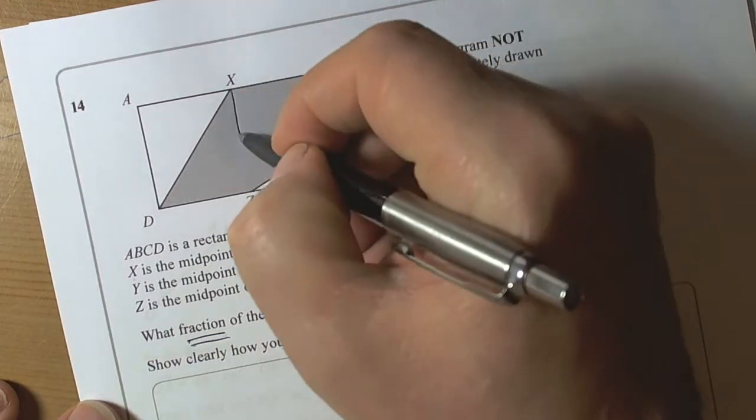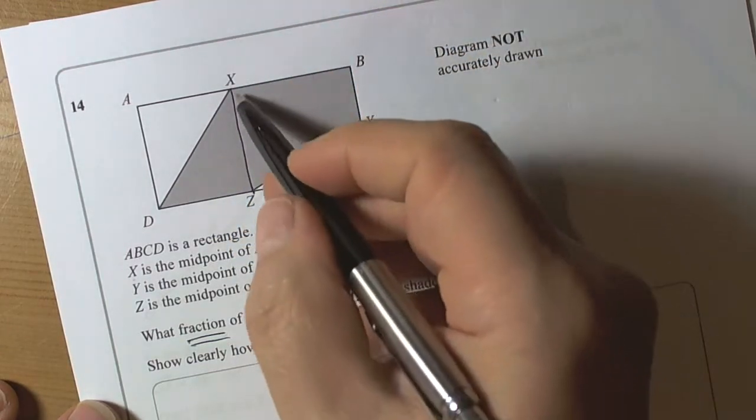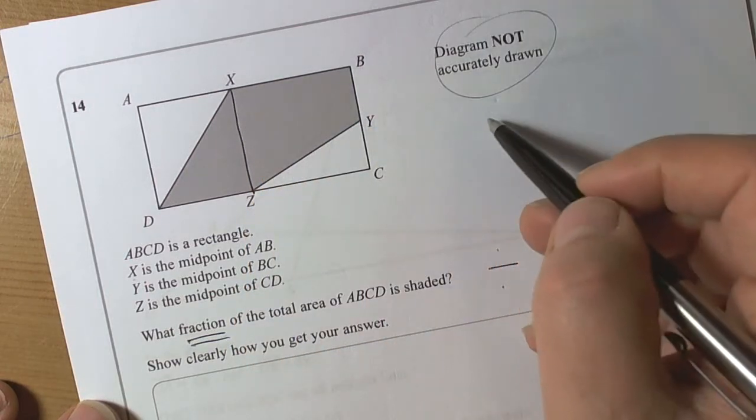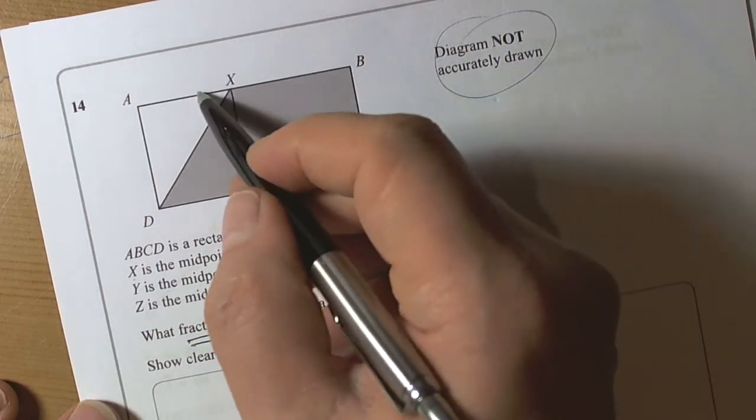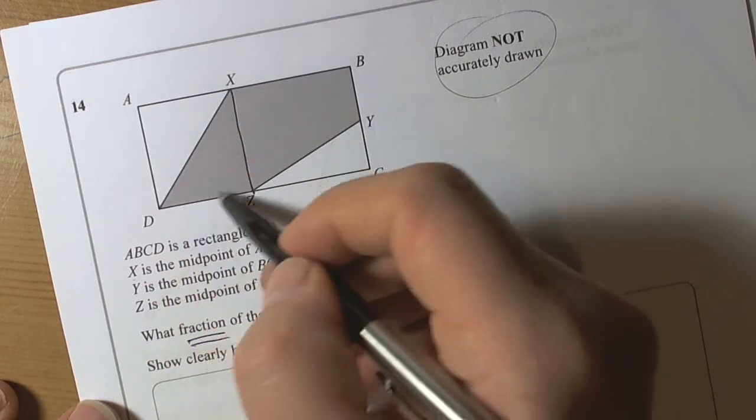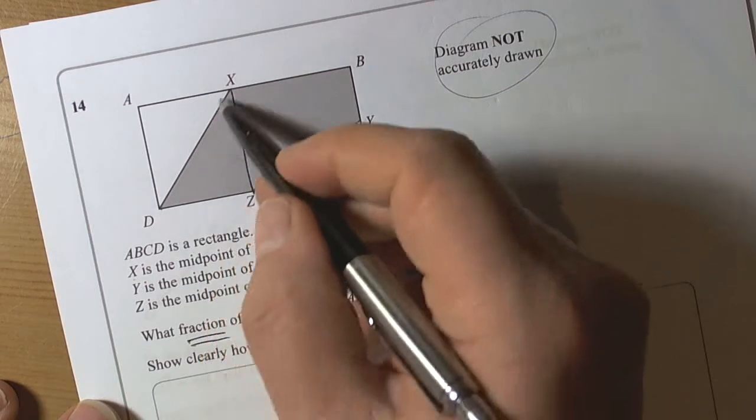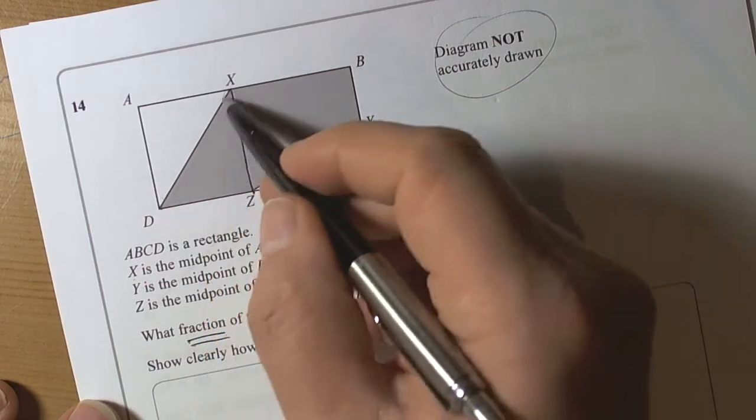So if I draw straight down from there to there, then that's telling me that because they're midpoints, even though they're saying it's not drawn accurately, the whole of this part here is one half of the rectangle. This line is going down the middle, and it's a diagonal of this shape here.